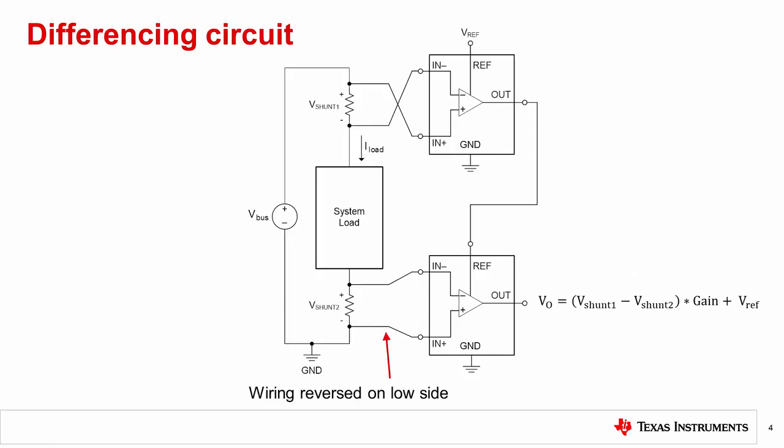There may be a need to measure the difference of the currents into and out of the system load. It's reasonable to expect that the current into and out of a load would be the same in a closed system. However, unexpected leakage currents can develop, which create this difference. The implementation shown here is a two-stage summing configuration, with the wiring to the second stage reversed.